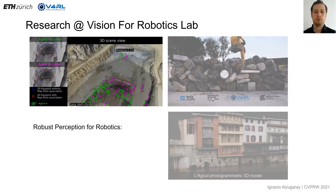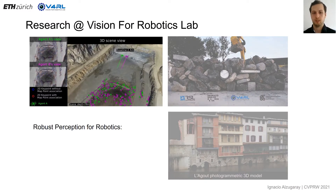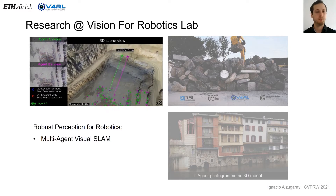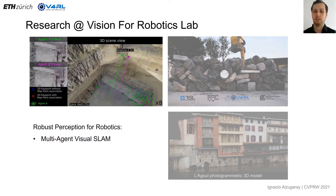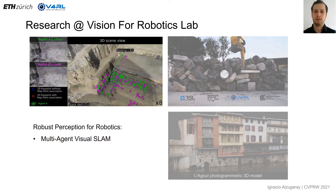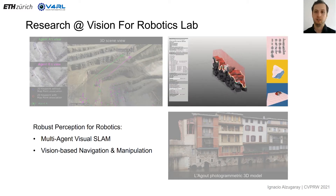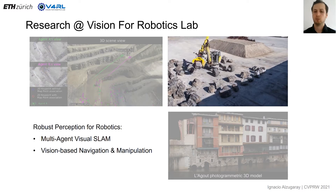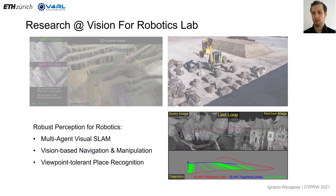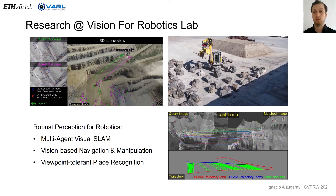At Vision for Robotics Lab, we are mainly investigating host perception for robotics applications. Some of the areas that we cover are multi-agent visual SLAM systems — as we can see here, two UAVs collaborating in a large-scale scenario. We have some research on vision-based navigation and manipulation, as we can see here in an autonomous excavator. And we have some works also on place recognition. In all these works, what we have been using is a traditional camera.